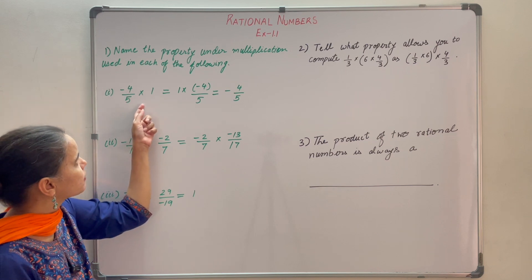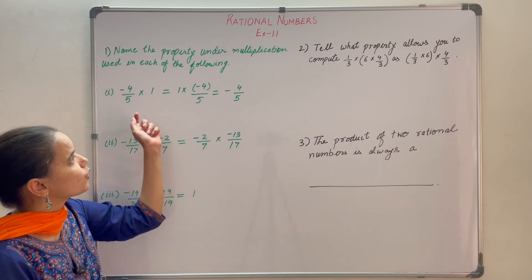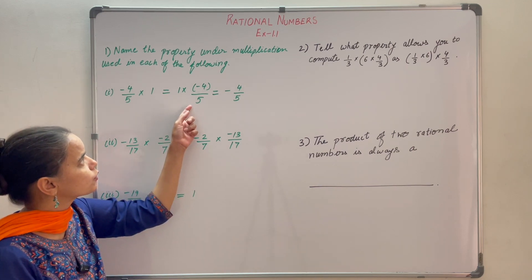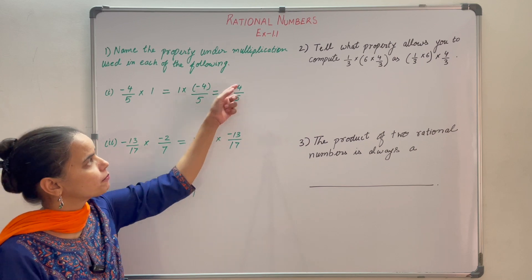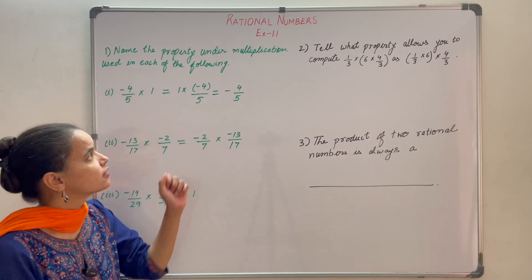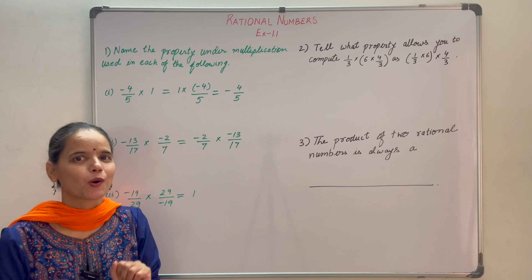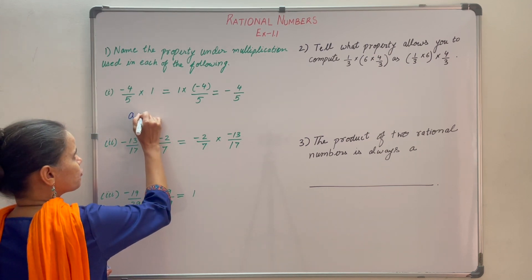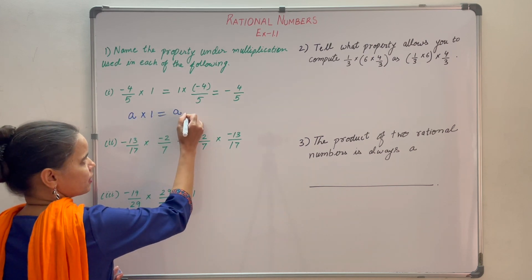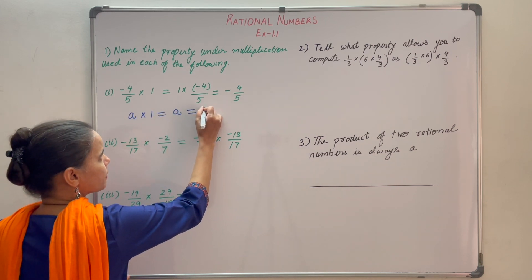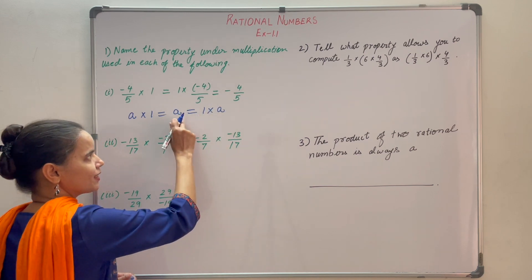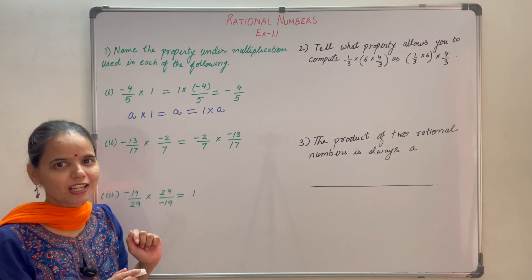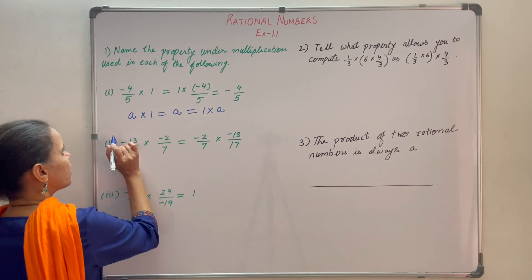Here minus 4 by 5 is multiplied to 1, and you get the same number minus 4 by 5. Here you are multiplying 1 to minus 4 by 5 and again getting minus 4 by 5. So which property is used here? 1 is the multiplicative identity. If any rational number A is multiplied to 1, you get the same rational number, and if you multiply 1 to any rational number A, you also get the same rational number.